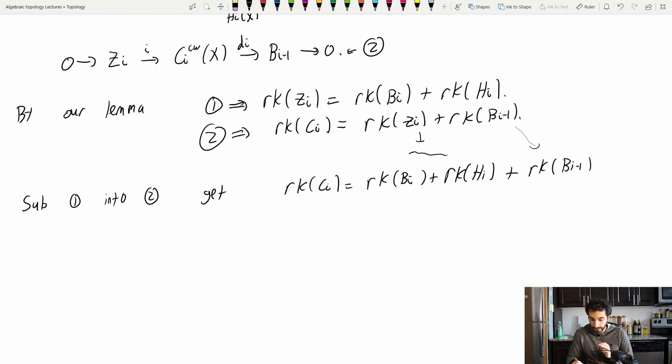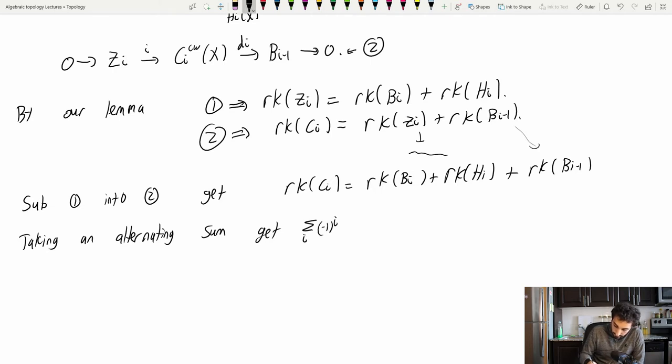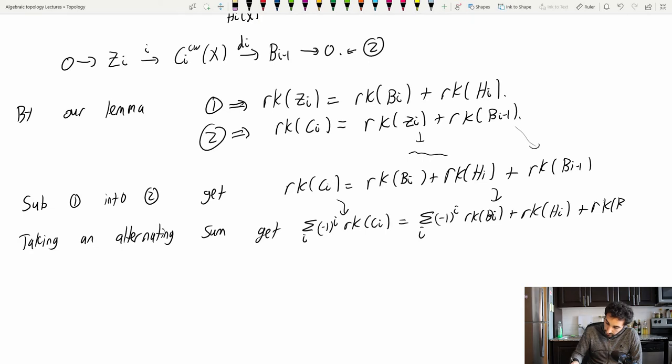Now, let's go ahead and add this all up. So taking an alternating sum, we get that the summation over i of minus 1 to the i of rank of Ci equals rank of Bi plus rank of Hi plus rank of Bi minus 1.